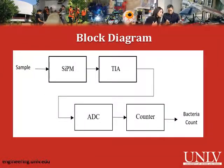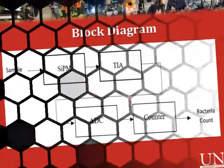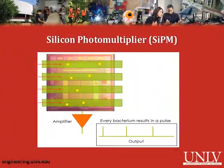This diagram represents our process: the blood sample will flow over the silicon photomultiplier, which will then output a signal that flows through the TIA to the ADC, and finally to the counter which will output the bacteria count. The silicon photomultiplier is a matrix of cells that each absorb photons. When a photon is absorbed by a cell, the silicon photomultiplier outputs a small current pulse in the micro amp range.